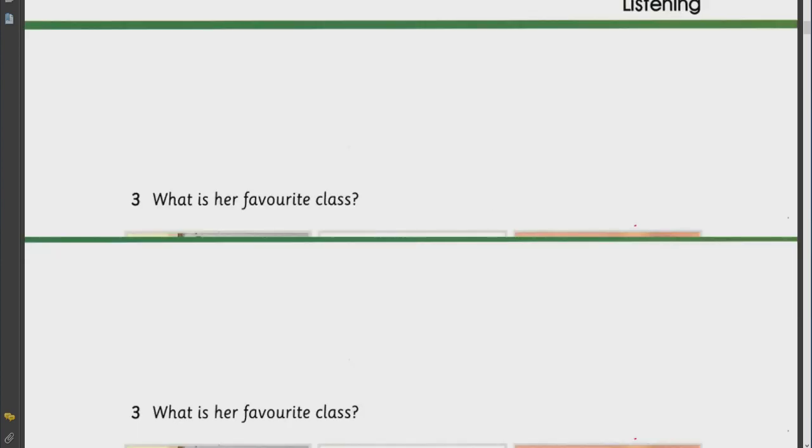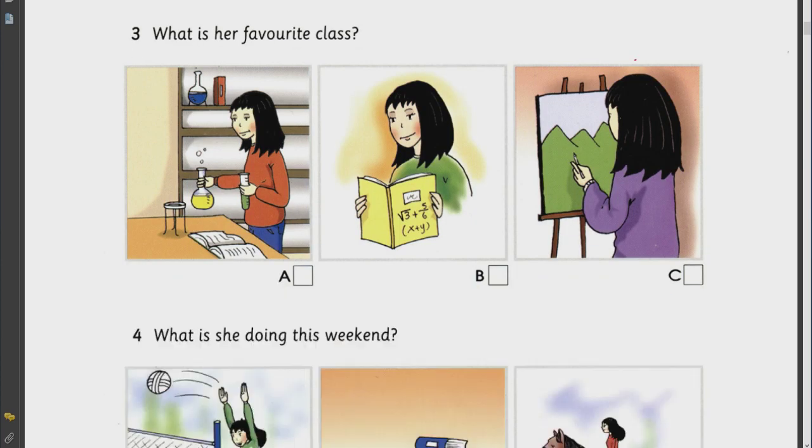Three. What is her favourite class? What does your sister study at college? Well. She wants to be an engineer. So she has to study a lot of subjects. Does she like science? Yes. She does. But she thinks it's difficult. So. Which subject does she prefer? Well. She's very good at maths. But she likes art best.